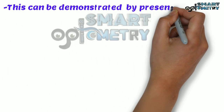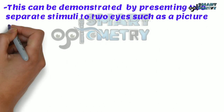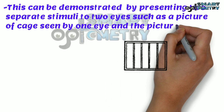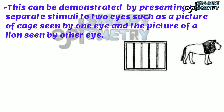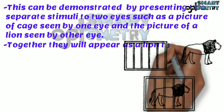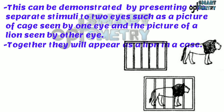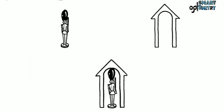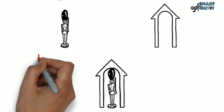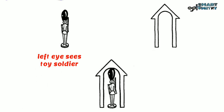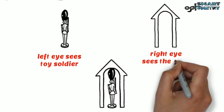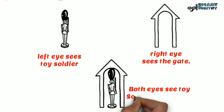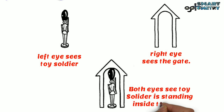This can be demonstrated by presenting two separate stimuli to two eyes, such as a picture of a cage seen by one eye and a picture of a lion seen by the other eye. Together, they will appear as a lion inside a cage. Another example: one eye sees a toy soldier while the other sees a gate, and when fused, the toy soldier appears to be standing inside the gate.